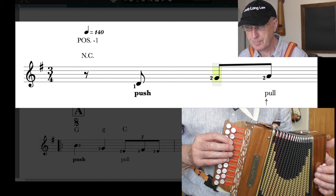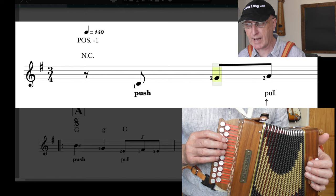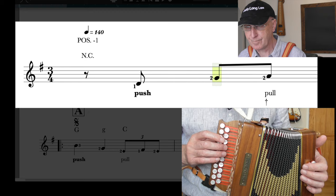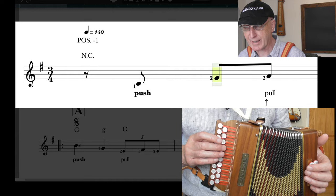So you'll start halfway through beat two on that quaver, which is a D on the push, and then you'll go to the button below, keep pushing, get the note G, and then with that same button pull out, you'll get the note A. So finger one, finger two, finger two.